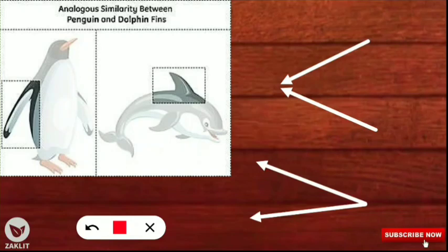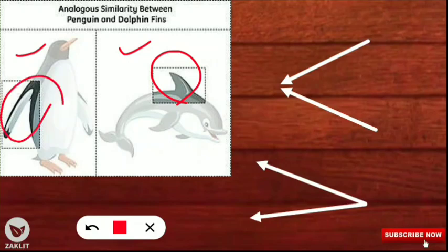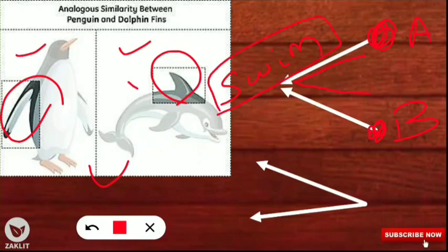As you can see on the left-hand side, we have pictures of a penguin and a dolphin. The fins of the dolphin and the flippers of the penguin are both used for swimming. However, these two organisms have different ancestors — let's call them ancestor A and ancestor B. They have converged in terms of the usage of their organs: both use flippers or fins for swimming. This is called convergent evolution, and the organs involved are called analogous organs.